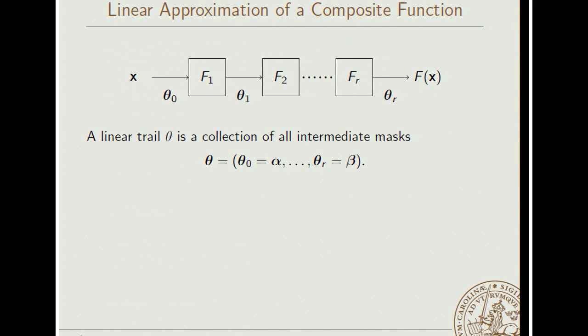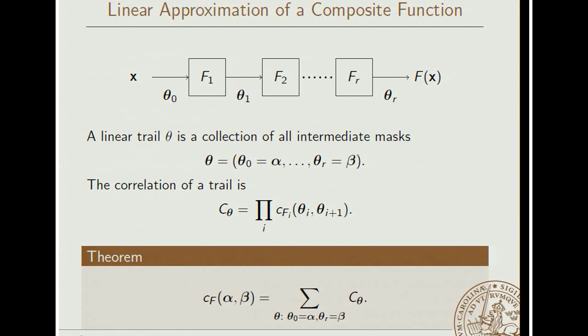A block cipher typically is constructed using a round function which we apply r times. And what can we then say about linear approximations? We can consider a trail, meaning that when we go from alpha on the input to beta on the output, we pass through several intermediate states where we have intermediate bitmasks. And for each such possible choice of intermediate bitmasks, we say that we have a trail. There are typically a large number of trails going from alpha to beta. And the correlation of such a trail we define simply as the product of the correlation of the individual round functions.